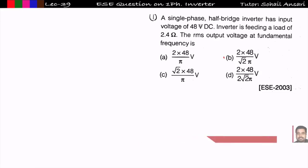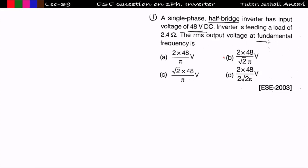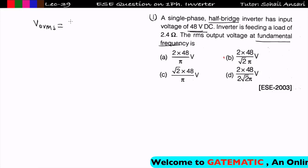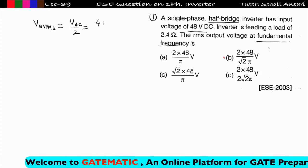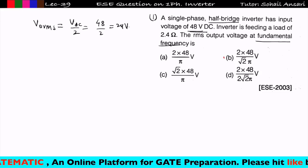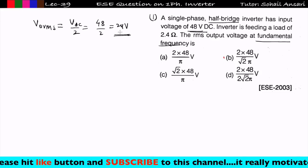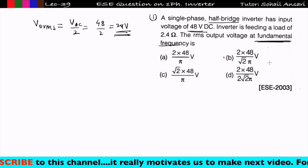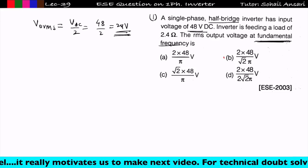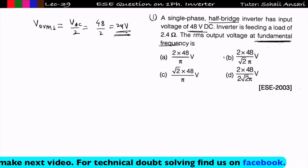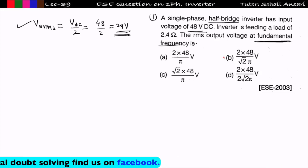The first problem: a single phase half bridge inverter has an input voltage equal to 48 volt DC, feeding a load of 2.4 ohm. The RMS output voltage at fundamental frequency is asked. Whenever the RMS output voltage is asked, many students directly compute V0_rms, which in a half bridge inverter equals Vdc/2 = 48/2 = 24 volt. However, here the question asks for the fundamental frequency RMS, not the total RMS output voltage.